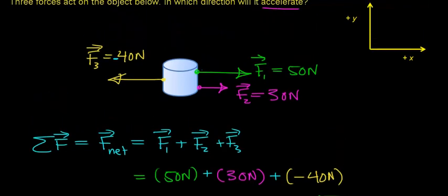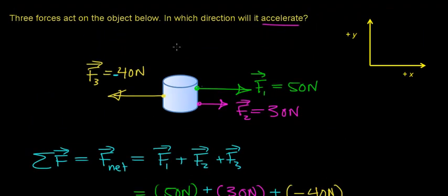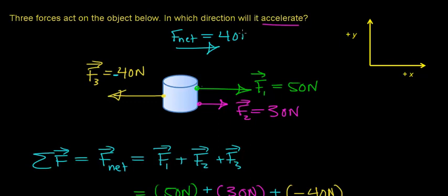Looking back at our object, there's going to be a net force acting in the positive x direction, causing this object to accelerate in that direction. The magnitude of that net force is 40 Newtons, pulling this object in the positive x direction. Remember, forces are applied to objects in two ways: either by pushing on them or pulling on them.